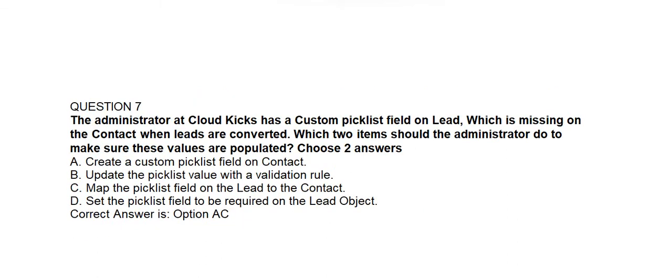Question number seven. The administrator at Cloud Kicks has a custom picklist field on Lead which is missing on the Contact when leads are converted. Which two items should the administrator do to make sure these values are populated? Option A: Create a custom picklist field on Contact. Option B: Update the picklist value with a validation rule. Option C: Map the picklist field on the Lead to the Contact. Option D: Set the picklist field to be required on the lead object. Correct answer is Option A and Option C: Create a custom picklist field on Contact, and map the picklist field on the Lead to the Contact.